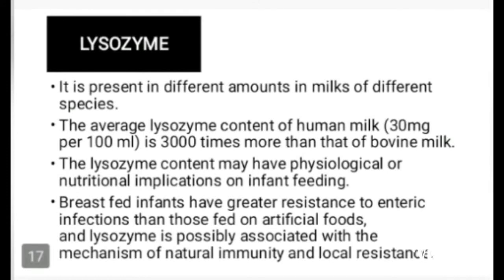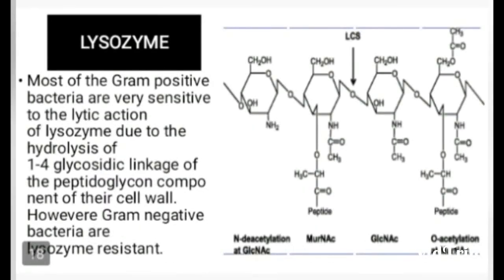Lysozyme content in human milk is 3000 times more than that of bovine milk. Lysozyme content may have physiological or nutritional implications for infant feeding. Breastfed infants have greater resistance to infection than those fed on artificial food. Lysozyme is possibly associated with the mechanism of natural immunity and local resistance. Most gram-positive bacteria are very sensitive to the lytic action of lysozyme due to hydrolysis of the 1,4-glycosidic linkage of peptidoglycan in their cell wall. However, gram-negative bacteria are lysozyme-resistant. The lytic action involves hydrolysis of the 1,4-glycosidic linkage of peptidoglycan, which is composed of NAM (N-acetyl muramic acid) and NAG (N-acetyl glucosamine).